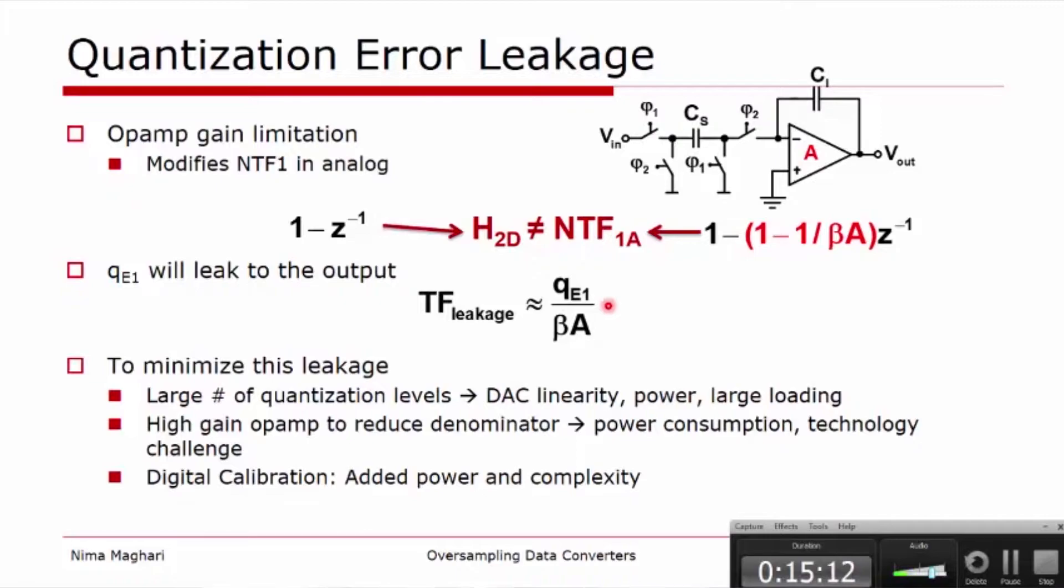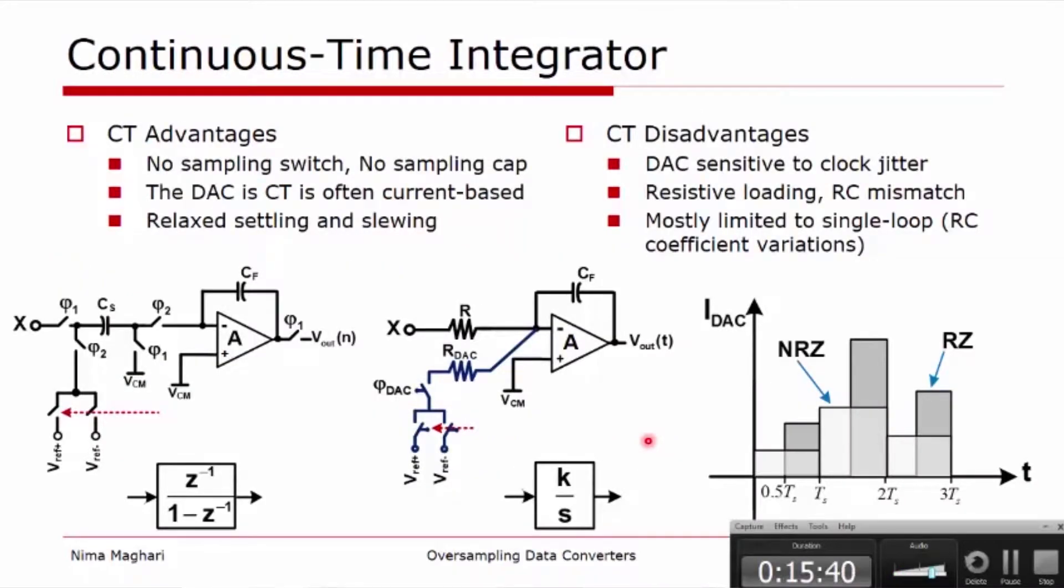Therefore, there are ways to minimize this leakage. One is larger number of quantization levels to reduce the quantization error itself, but that runs into linearity and power hungry and a lot of loading on the loop. We can have a higher gain of op-amp to reduce the denominator here. But then again, we wanted to avoid that problem in the first place, so there's a technology challenge there. And there are some works on digital calibration, but that also adds power and complexity.